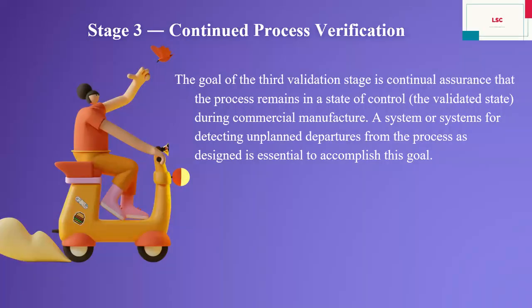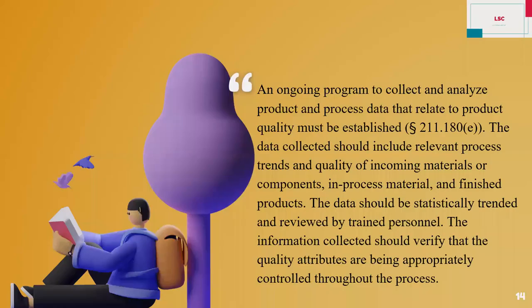Stage 3 is our subject: continued process verification. The goal of the third validation stage is continuous assurance that the process remains in a state of control. A system for detecting unplanned departures from the process as designed is essential to accomplish this goal. An ongoing program to collect and analyze product and process data that relate to product quality must be established.